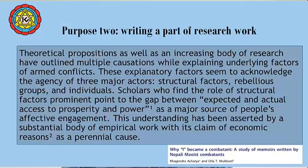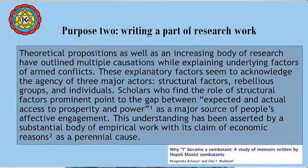The excerpt from the research article shows: Theoretical propositions as well as an increasing body of research have outlined multiple causations while explaining underlying factors of armed conflict. These explanatory factors acknowledge the agency of three major actors: structural factors, rebellious groups, and individuals. Scholars who find structural factors prominent point to the gap between expected and actual access to prosperity and power as a major source of people's affective engagement.